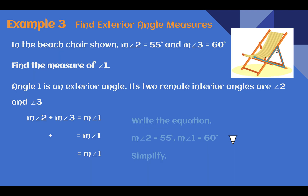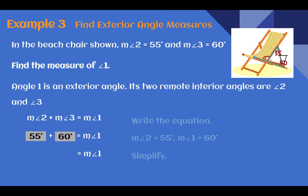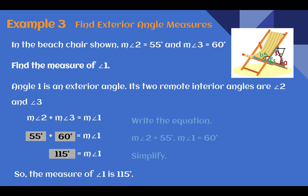Example three — find exterior angle measures. In the beach chair shown, the measure of angle two is 55 and the measure of angle three is 60. What is the measure of angle one? Angle one is an exterior angle, and angles two and three are both remote interior angles. Using our exterior angle theorem: 55 plus 60 equals 115. So the measure of angle one is 115 degrees. We could have found the missing interior angle first and then used supplementary angles, but using remote interior angles is more efficient.